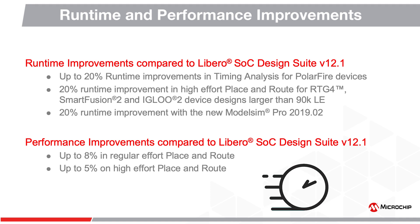In the RTG4 family, we are supporting production timing for 150k logic element devices with CQFP352 package in standard and dash-1 speed grades. We are also supporting production timing for the low-power version of RTG4 150k logic element devices with CQFP352 package in standard speed grade. Compared to version 12.1, Microchip improved timing analysis runtime by up to 20% for PolarFire devices.